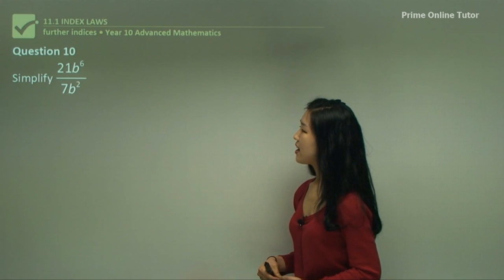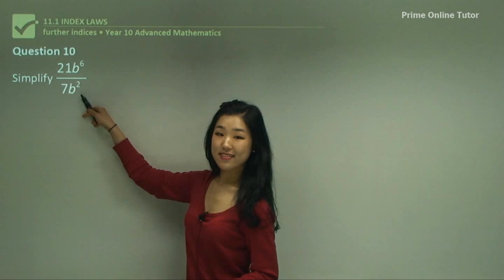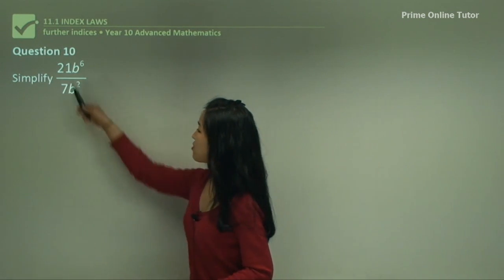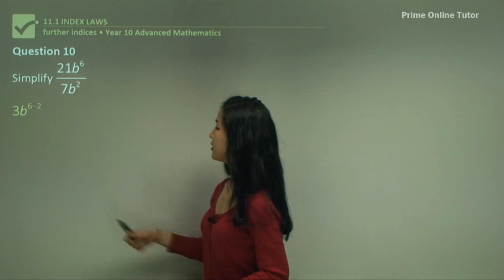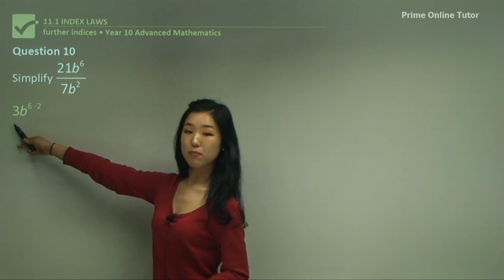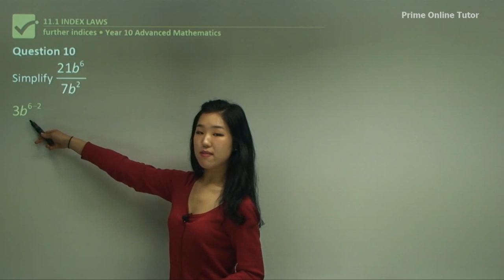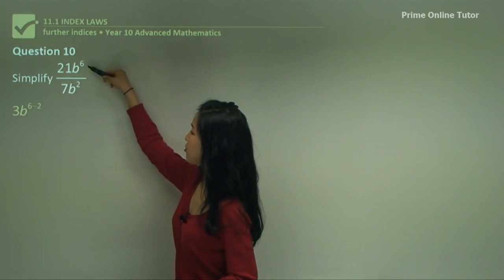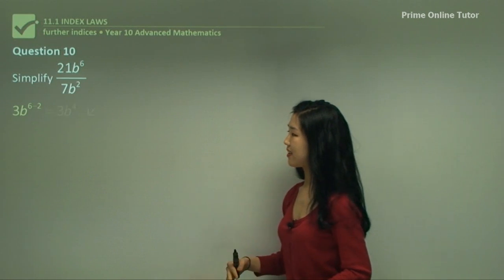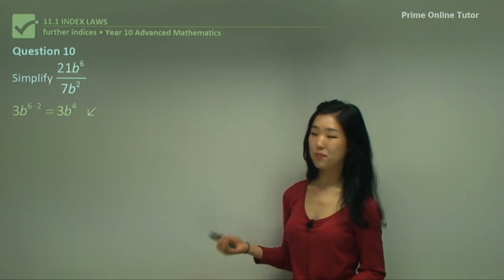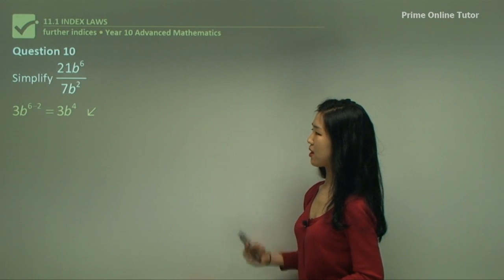Question ten. We're dividing again, same base. The coefficient is 21 and 7. Since 7 divides into 21, 21 divided by 7 is simply 3 — simplify the coefficients if you can. Then leave base b as it is and simply subtract the indices: 6 minus 2. So the answer is 3b to the power of 4. It's very simple.